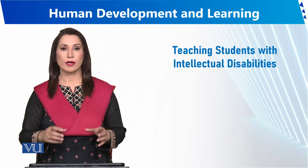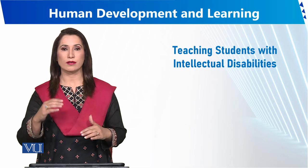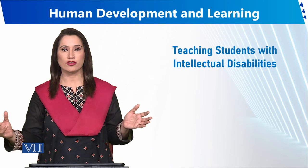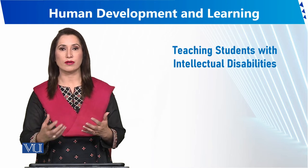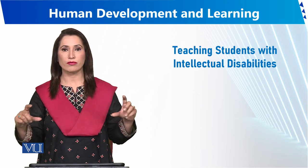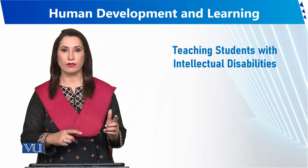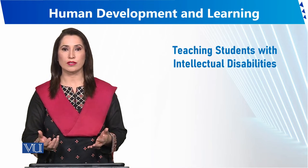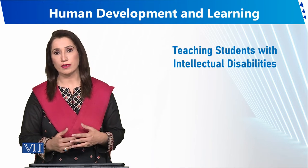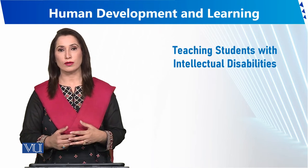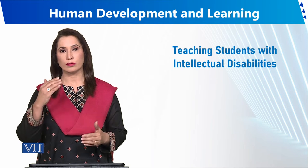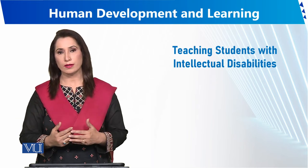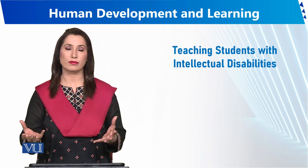When we talk about intellectual disability, we mean that the student has two types of deficiencies: intelligence deficiency and social skills deficiency, along with difficulty adjusting to the environment. Teachers need to tackle all three of these deficiencies. Students with intellectual disabilities face challenges with different levels of intelligence quotient.